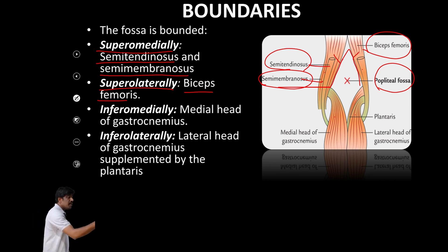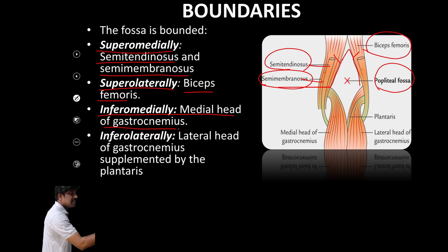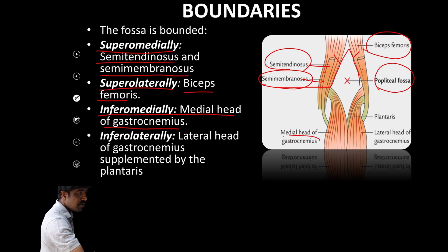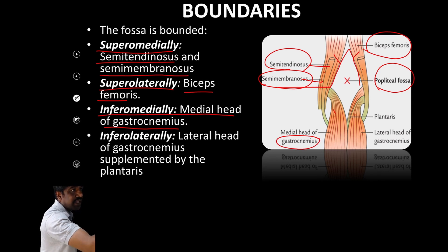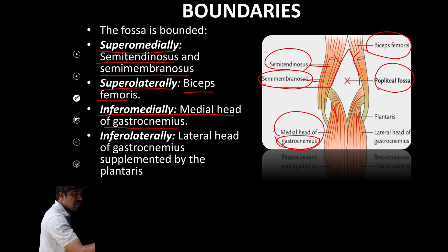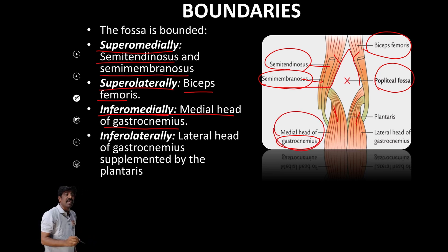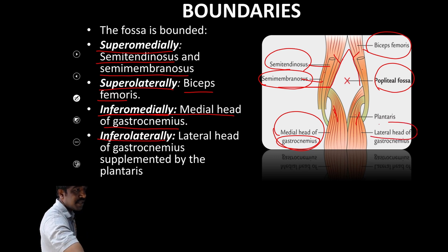Inferiorly, inferomedially, the boundary is formed by the medial head of gastrocnemius. Gastrocnemius has two heads — one medial head and one lateral head. The medial head forms the inferomedial boundary.